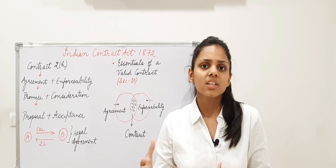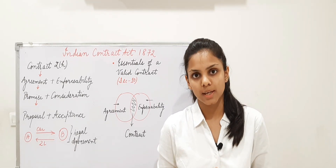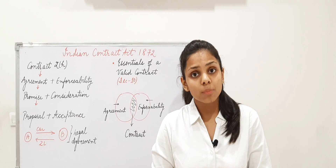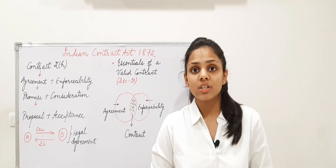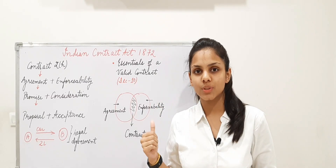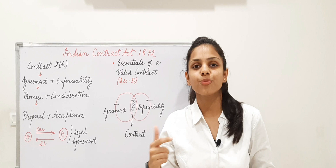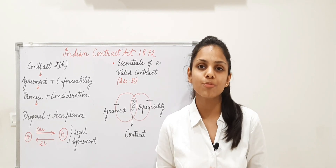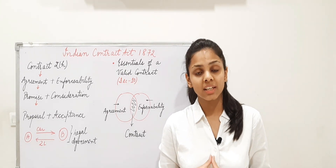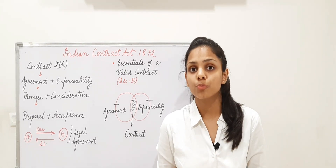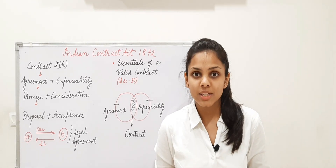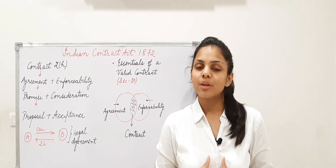Everything in the Indian Contract Act is consistent with our Indian Constitution, and its principles remain enforceable. An important point is that when Article 370 was abrogated, its provisions became enforceable in the state of Jammu and Kashmir as well — previously it was not enforceable there, but after the abrogation of Article 370, this act also applies to Jammu and Kashmir.